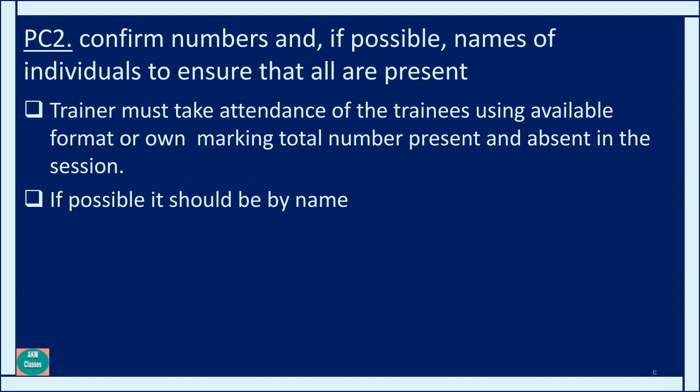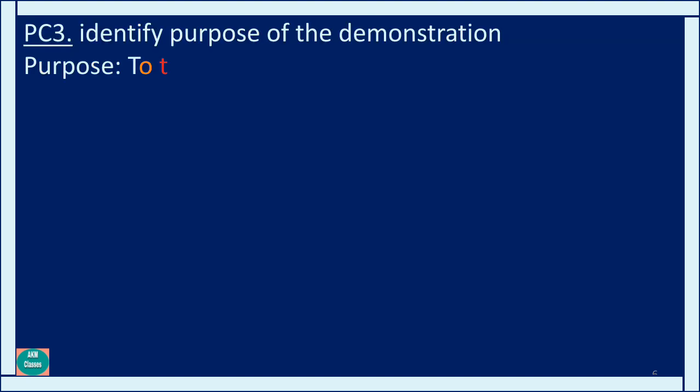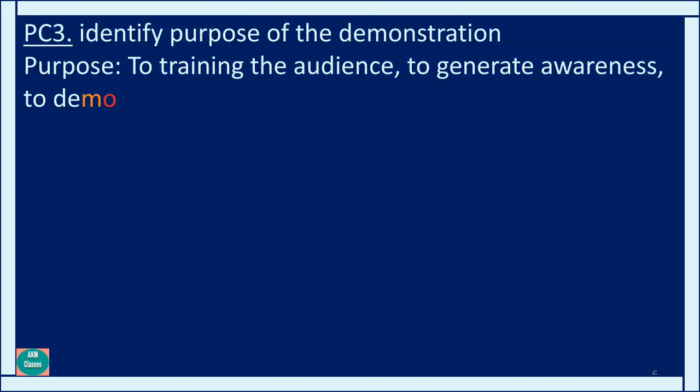Knowing the strength of participants gives an idea of the interest level of the audience — whether they have enthusiasm and zeal to attend this lecture or training. It also becomes easier to understand the level of the audience. PC3 is identify purpose of demonstration — the purpose being to train the audience, to generate awareness, or to demonstrate competency.